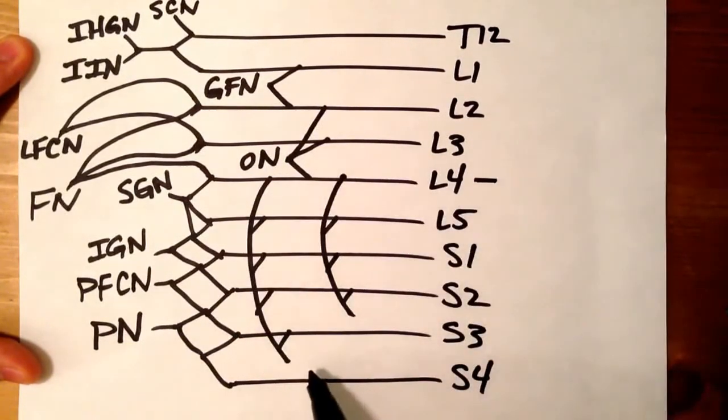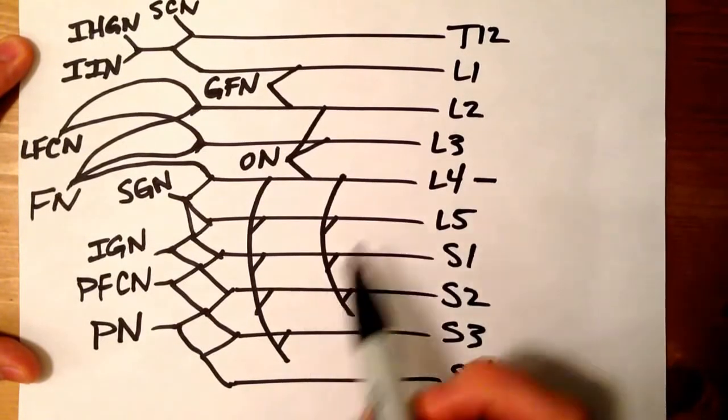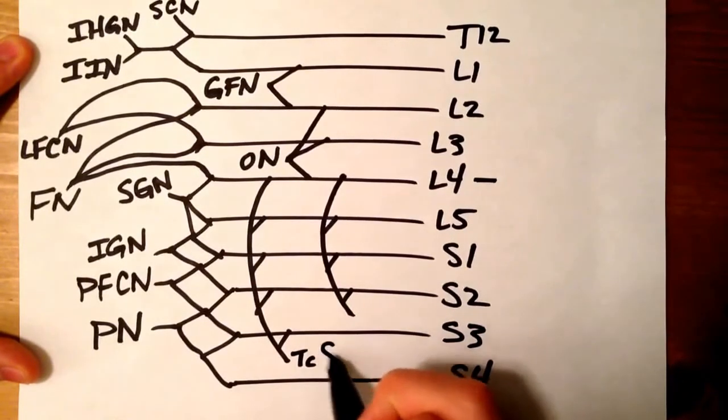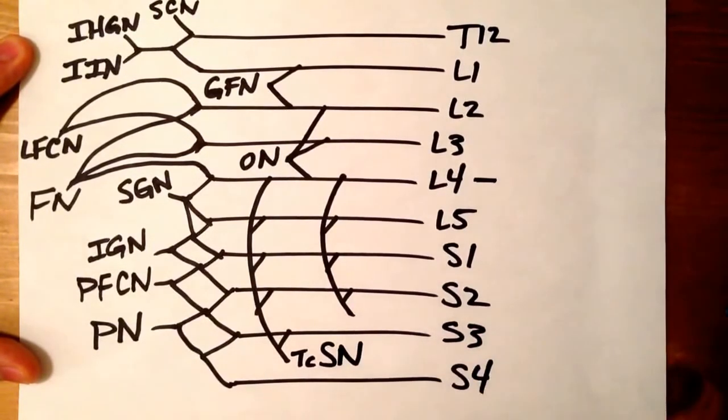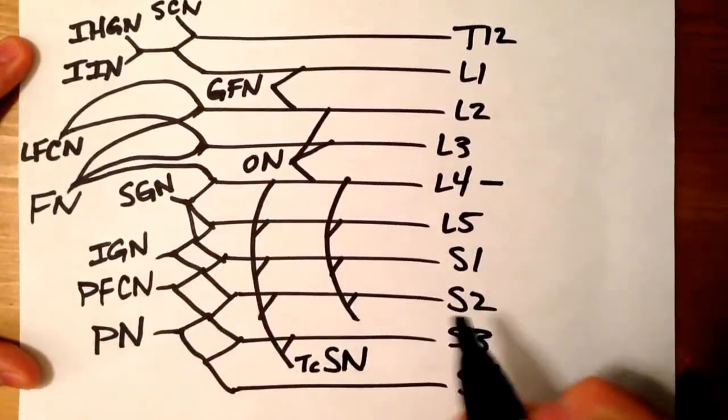This longer branch right here, it's going to be one of your sciatic branches. But this one from L4 to S3 is going to be your tibial component of the sciatic nerve. And I just like to write all the initials for these. So that's why I'm writing them out like this.